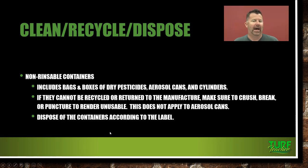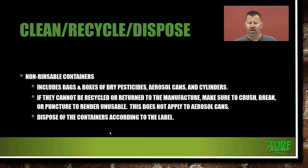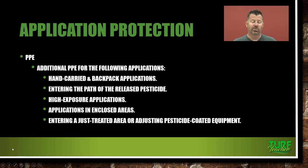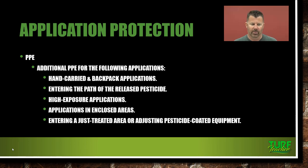Non-rinsable containers include bags of fertilizer or dry pesticides, boxes of dry pesticides, and aerosol cans and cylinders. If they cannot be recycled or returned to the manufacturer, make sure to crush, break, or puncture to render them unusable — this does not apply to aerosol cans, which you don't want to puncture. Dispose of the containers according to the label. Notice everything always says refer to the label, because everything you could possibly imagine about this pesticide — mixing it, using it, disposing of it — is going to be on the label.